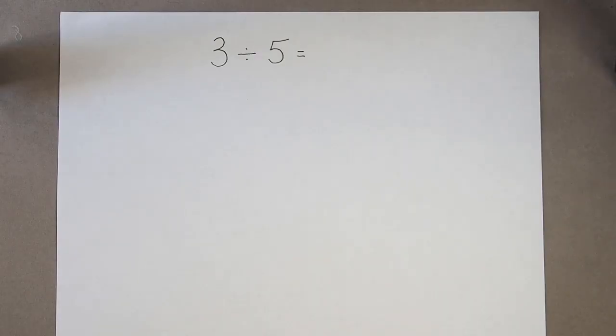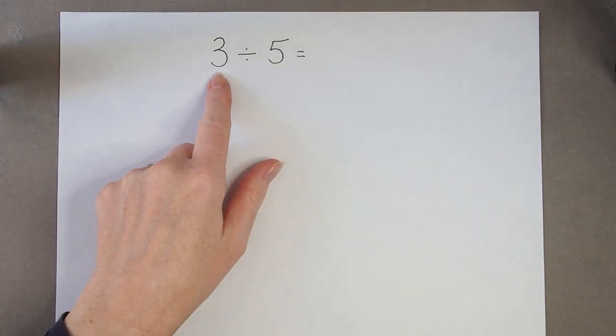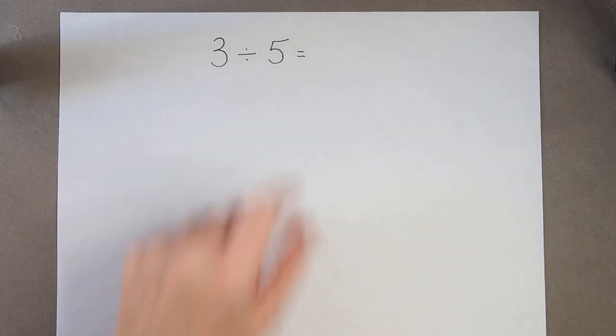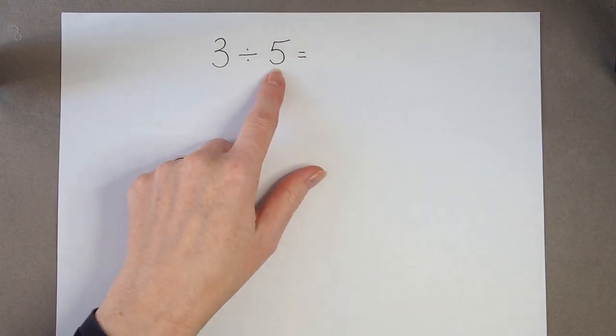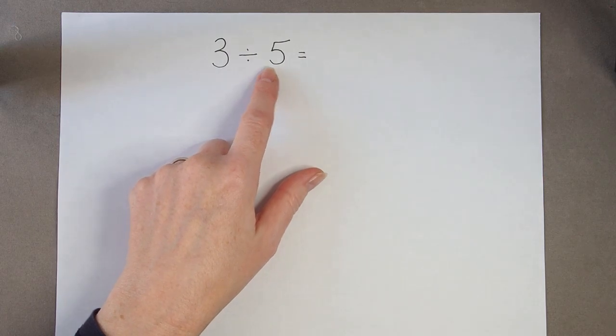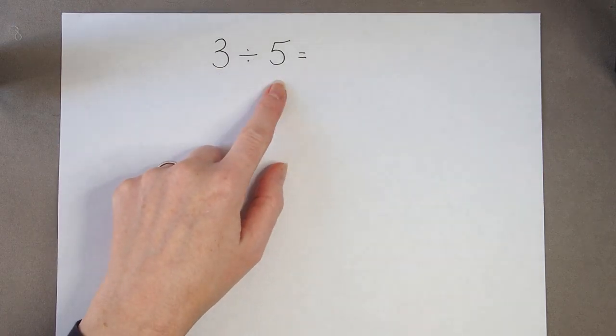One calculation that might seem a bit tricky and can easily catch you out is a calculation like 3 divided by 5. So what I've got to be careful about here is that I'm starting with 3 and I'm counting up in 5's. So 3 is smaller than 5.